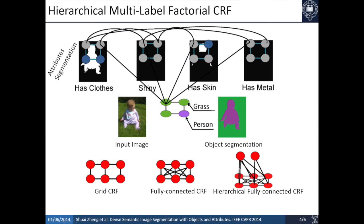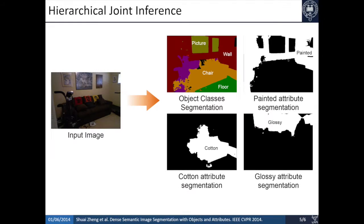In this paper, we propose a hierarchical multi-label factorial conditional random field framework. With such a framework and filtering-based mean field approximated inference, we could achieve much more fine and detailed image segmentation results.